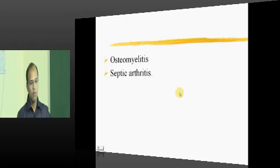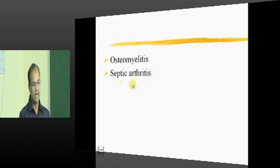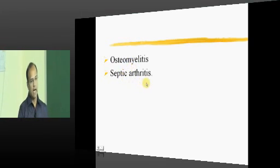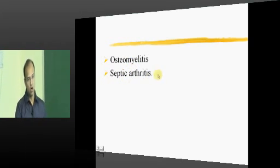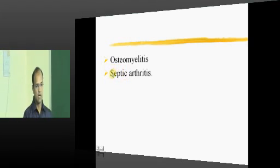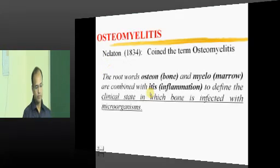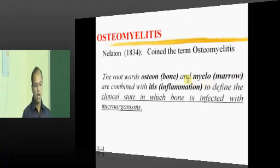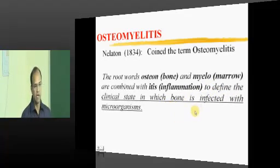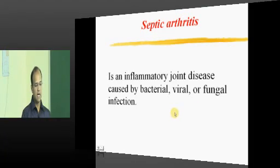I will show you some pictures of complications of bone and joint infections. In this talk we will learn about two things: one is osteomyelitis — 'itis' is suggestive of inflammation of bone as well as bone marrow — and septic arthritis, which is inflammation of a joint caused by microorganisms. Osteomyelitis: 'osteon' means bone, 'myelo' means marrow — it defines a clinical state in which the bone is infected with microorganisms. Septic arthritis is an inflammatory joint disease caused by microbes.